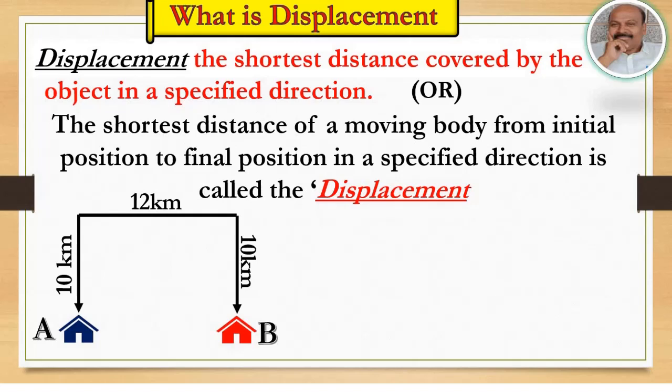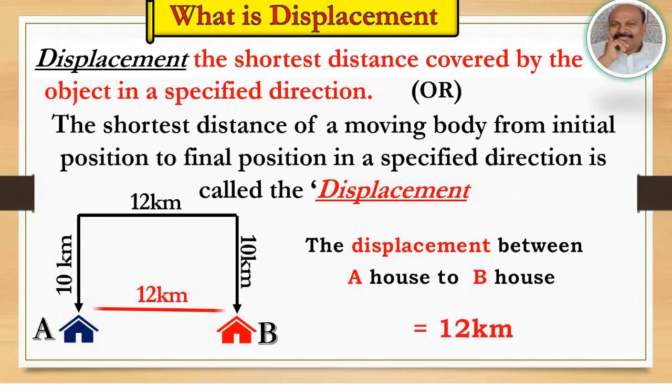So now we have to find the displacement between A house to B house. 12 km.